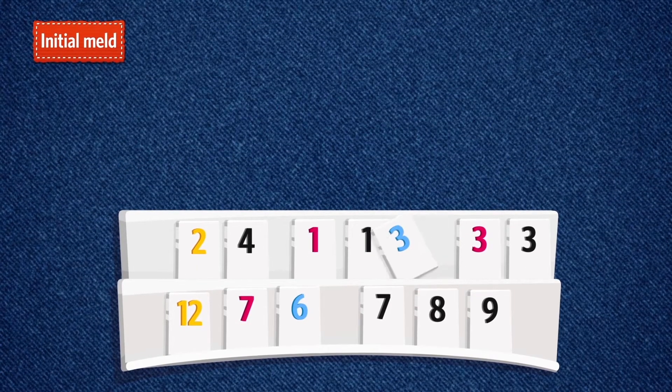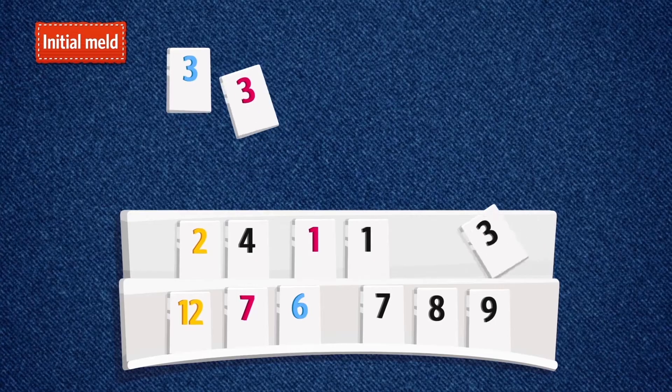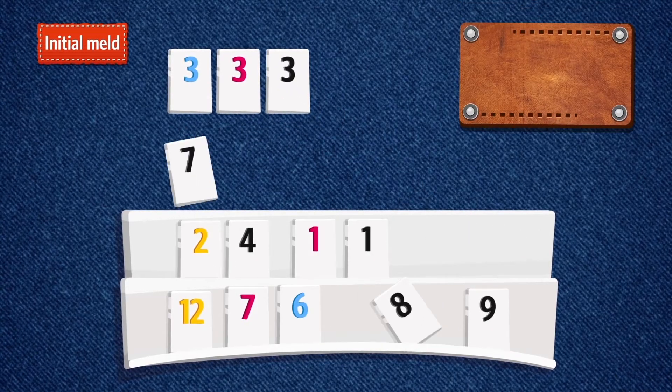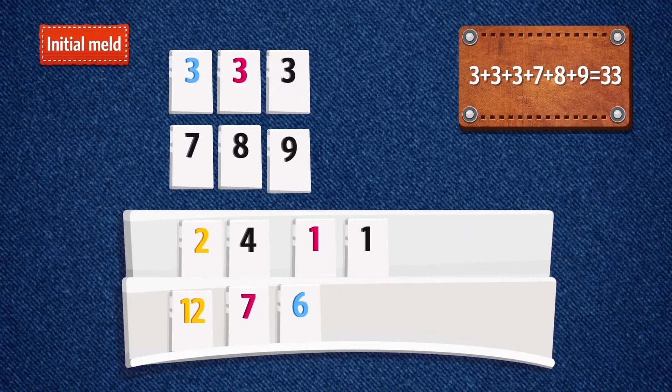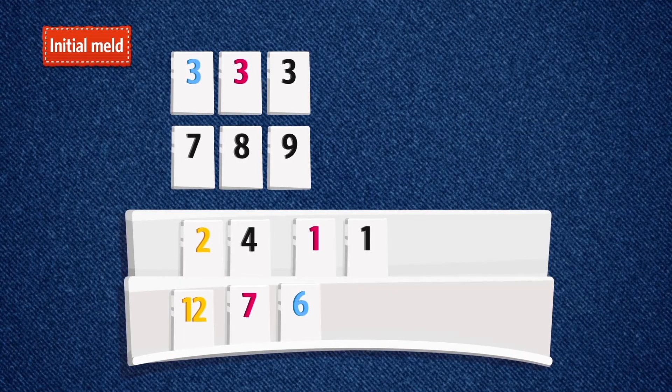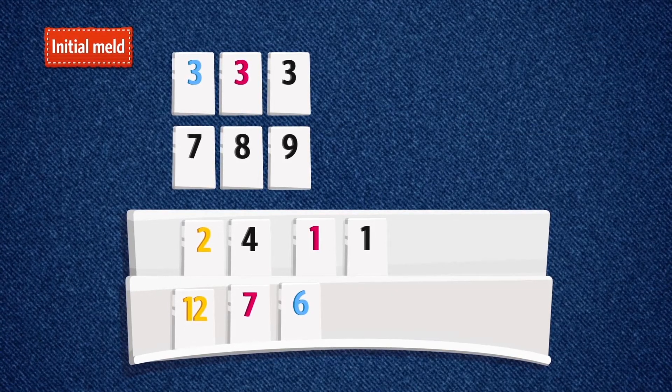Initial meld. Jump into the game by putting an initial meld on the table in one or more sets. The initial meld must total at least 30 points. Jokers can be used. You cannot add on to sets already on the table.